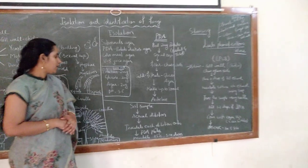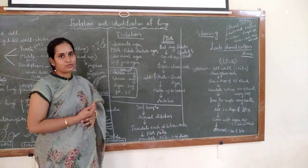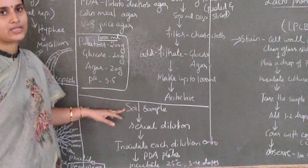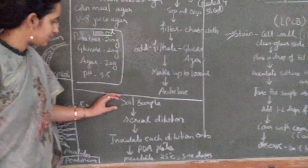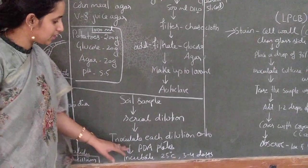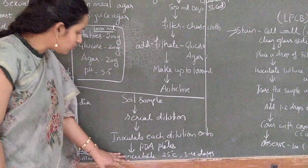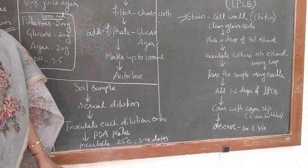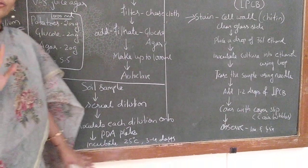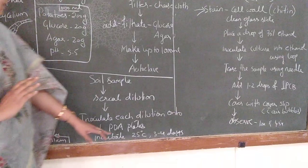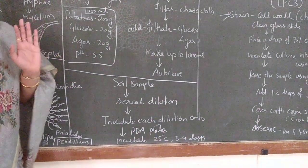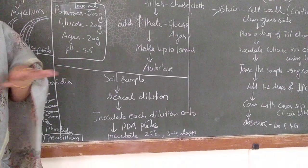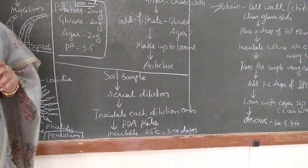Now the media is ready. To plate the sample onto the PDA plates: whatever soil sample, fruit sample, or any sample you have selected — perform serial dilutions, then plate each dilution onto the PDA plates. Those plates have to be incubated at 25 degrees centigrade. For bacteria we incubate at 37 degrees, but for fungi we incubate at room temperature — 25 degrees centigrade — for 3 to 4 days. No need to keep the plates inside the incubator when isolating fungi; place them outside at room temperature.